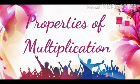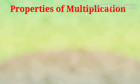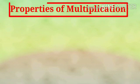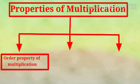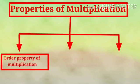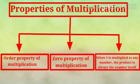Today we are going to study about properties of multiplication. There are three properties of multiplication: order property of multiplication, zero property of multiplication, and when one is multiplied to any number, the product is always the number itself.